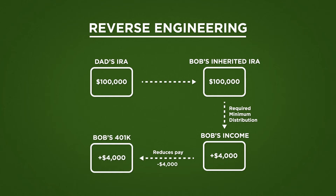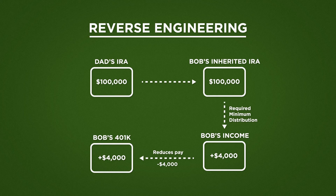By reducing his pay, he'll reduce his taxable income. We've increased his taxable income by $4,000 from the distribution, and we've reduced it by $4,000 by the contribution. So the result is a tax neutral event. Here's a way that over a period of time Bob can move the money from his dad's IRA into his 401k, which at his retirement will eventually be his IRA. Life is good.